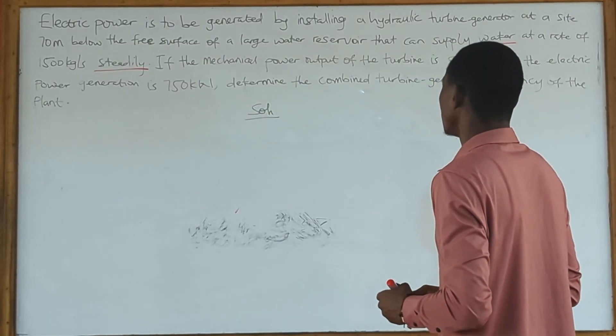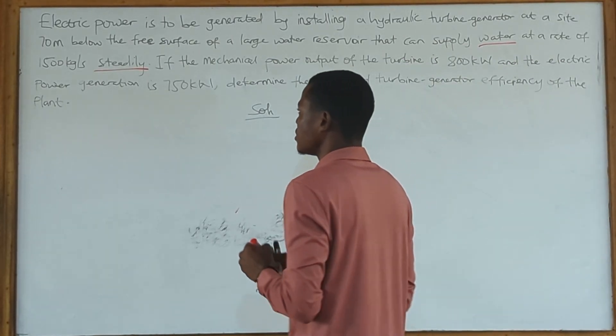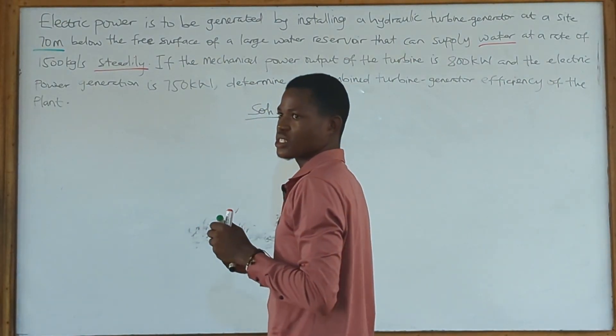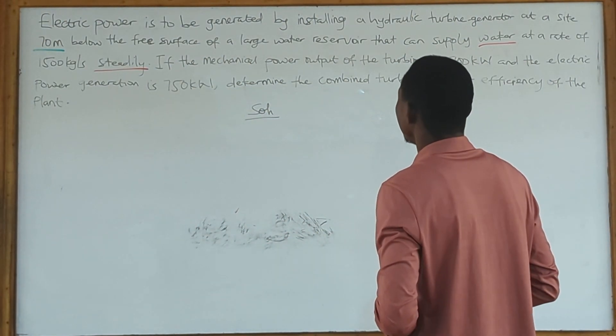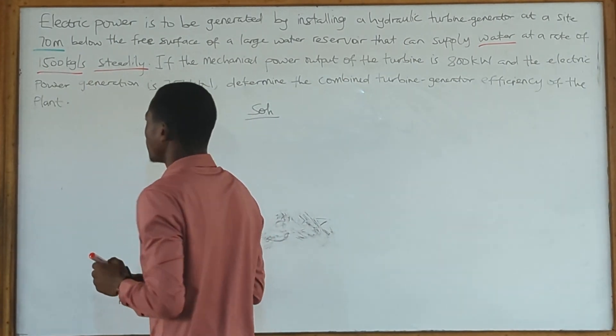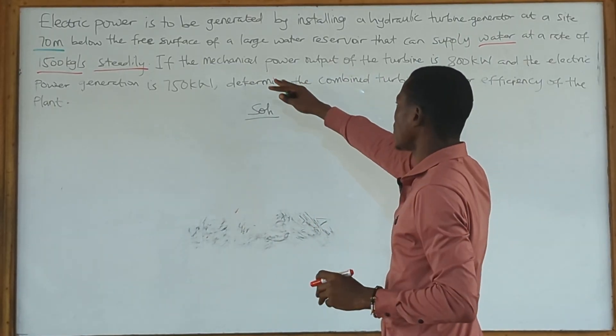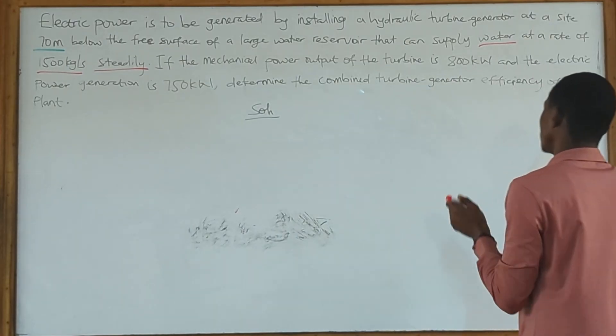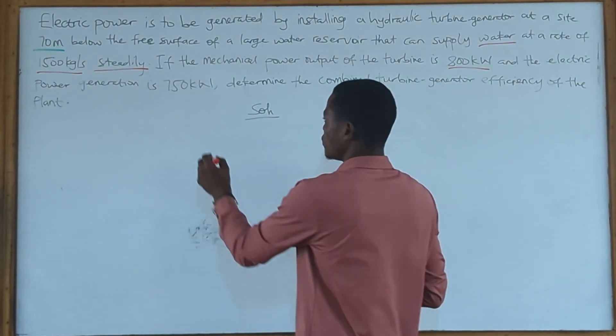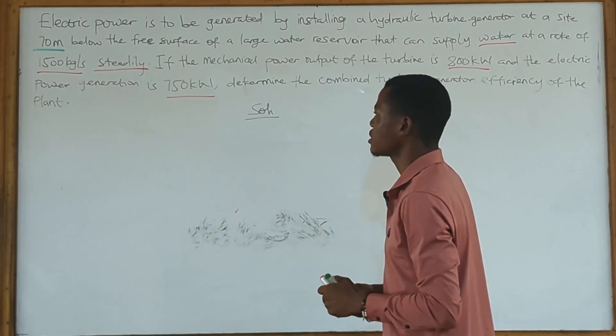The question reads: Electric power is to be generated by installing a hydraulic turbine generator at a site 70 meters below the free surface of a large water reservoir that can supply water at a rate of 1500 kilograms per second. The power output of the turbine is 800 kilowatts and the electric power generation is 750 kilowatts.